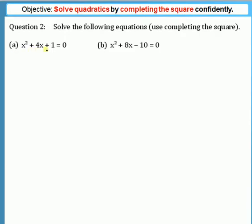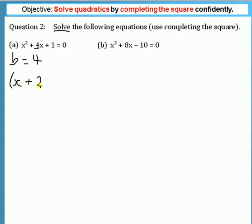We have a normal quadratic here: x² + 4x + 1 = 0, and we want to solve that — work out what x is — using this completing the square procedure. The first thing to identify is the coefficient, that's the number before the x term. In this case 4, so our b term is 4. That's going to be very important. Our first step is to set up a single bracket with x, and we find half of 4, which is 2, so we write (x + 2) and then we square the whole bracket.